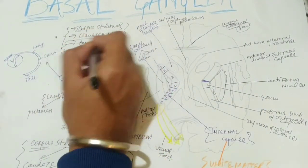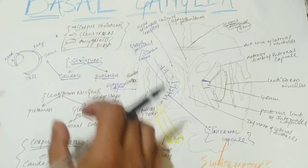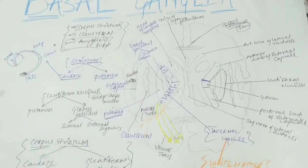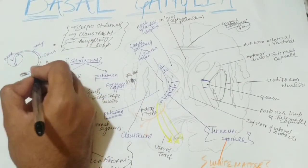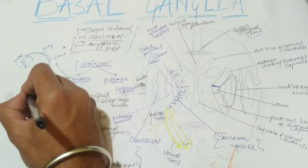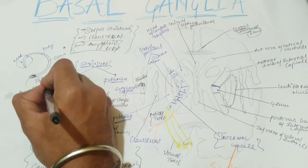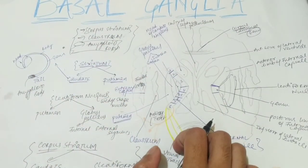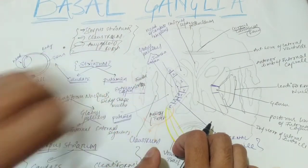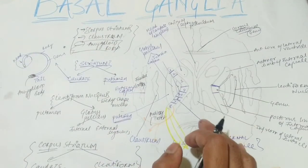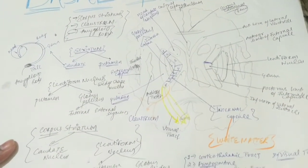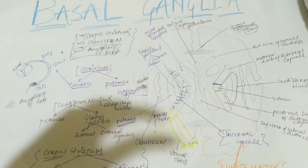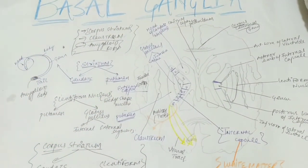What about the amygdaloid body? The amygdaloid body doesn't have a major role in this section — just remember it is concerned with our limbic system. It is present at the tail of your caudate nucleus, and you can see its location in the sagittal section below. So this was the basic overview of the basal ganglia. I will tell you the striato-pallidal system in the next video — the basic concepts of neurotransmitters, how they are released, and how they stimulate or inhibit voluntary functions. Thank you.